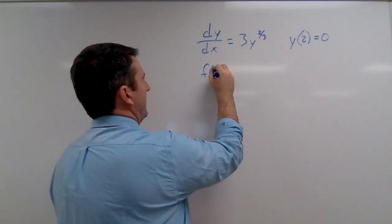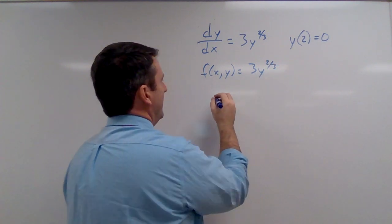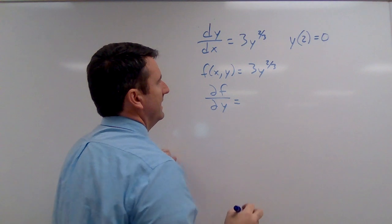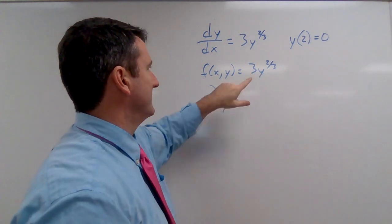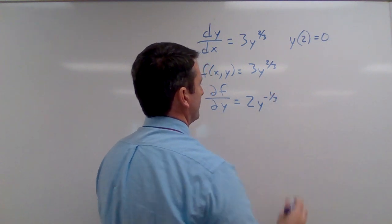Alright, so our function f of xy is 3y to the two thirds. And the partial derivative of that function with respect to y is then going to be, if we bring that two thirds down, that's 2y to the negative one third.